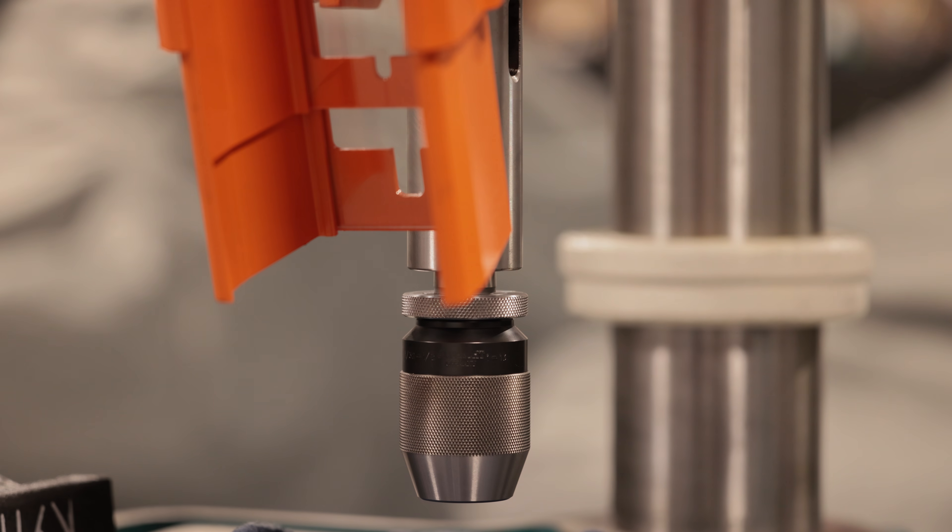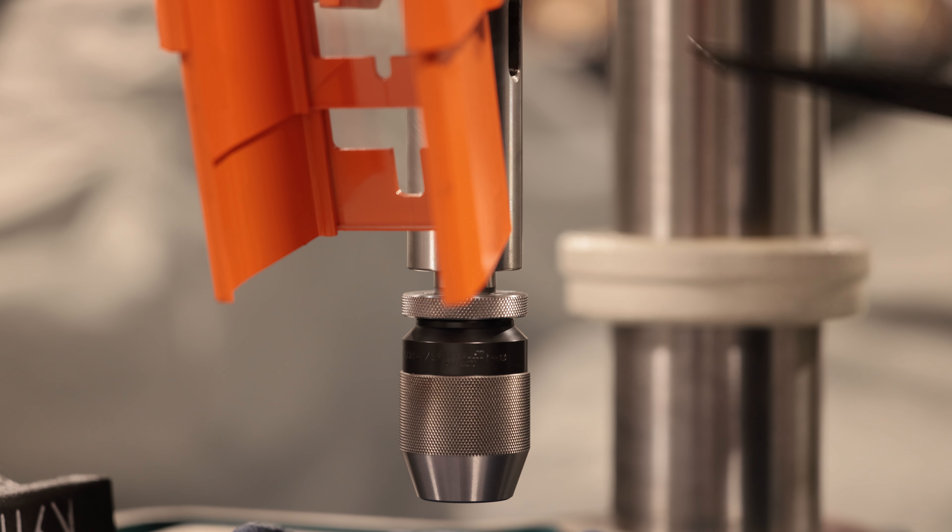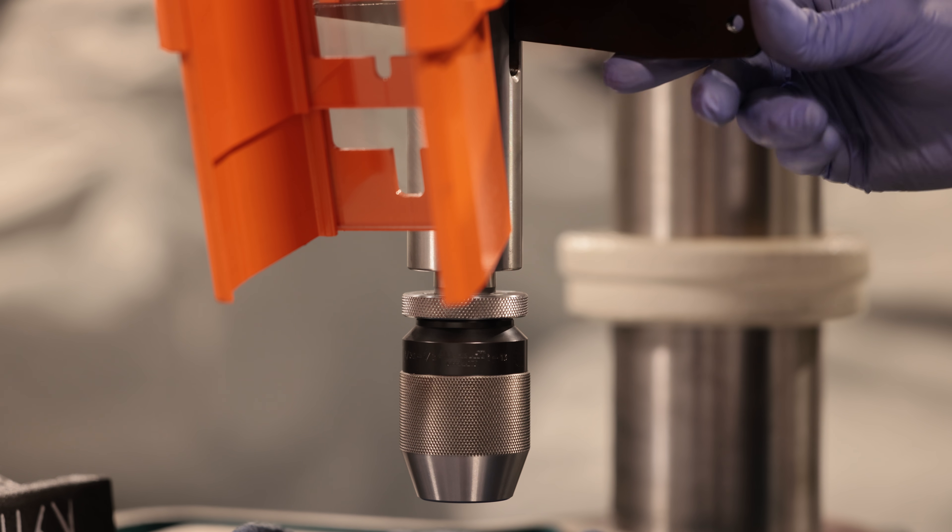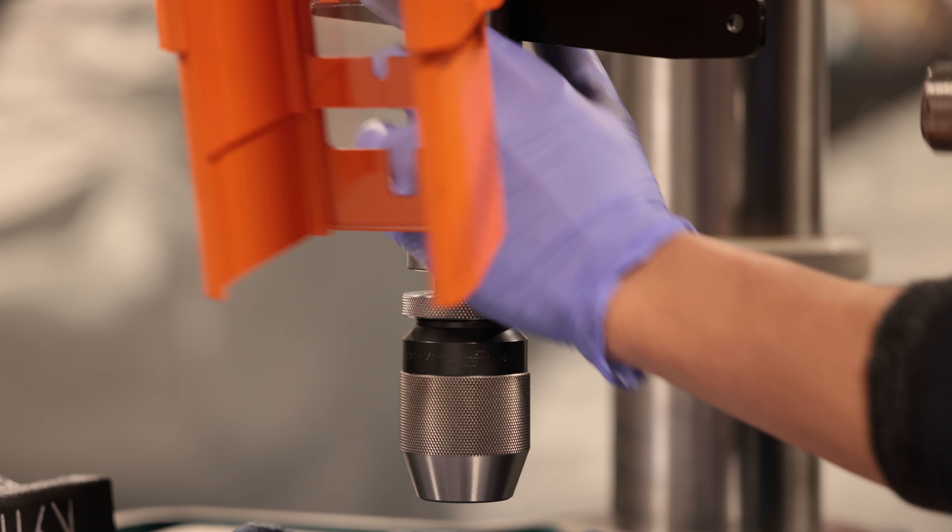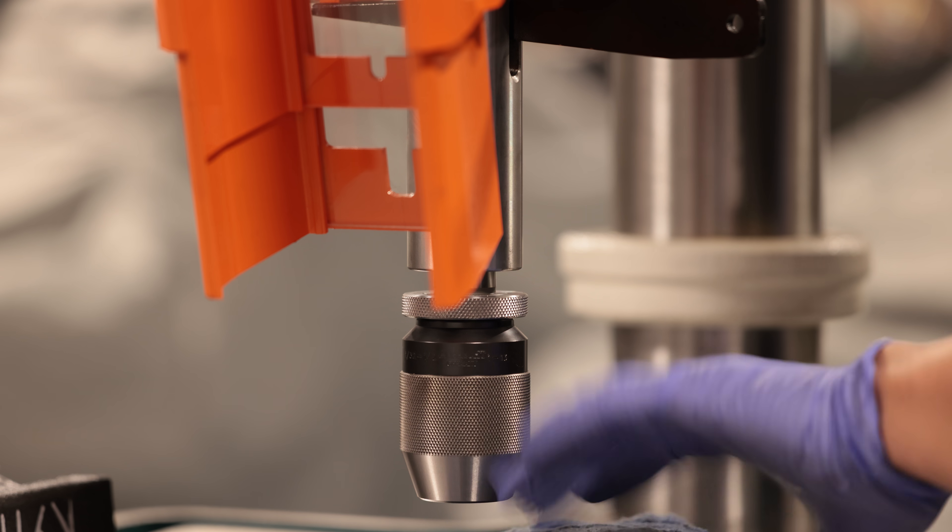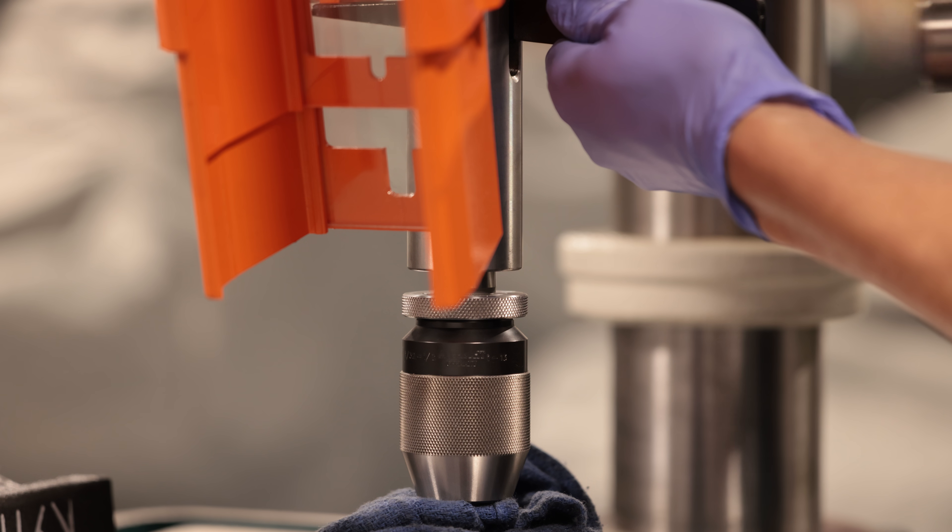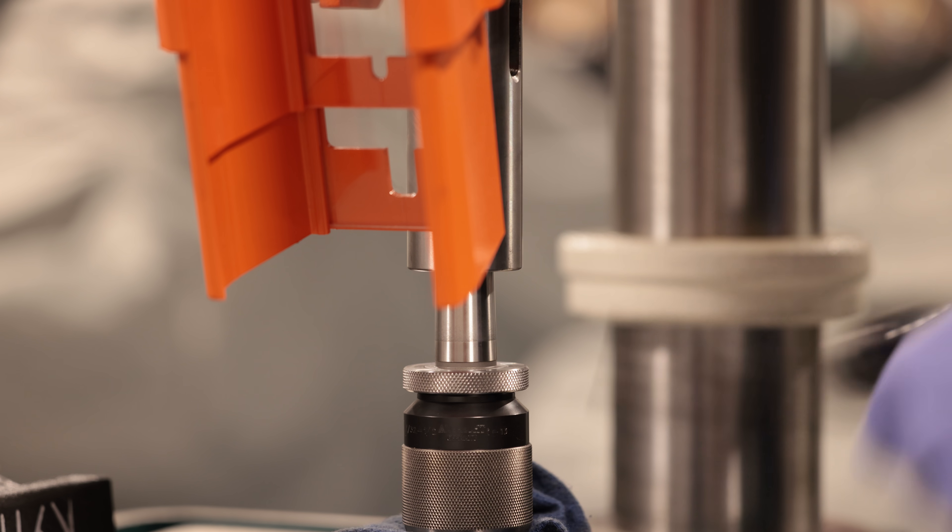The steps to remove the chuck are very simple. All you need is your drift key and a hammer. I'll lock the quill down to its lower position and put something soft under the chuck to catch it when it releases. A folded rag will do the job. A few taps of the hammer and the chuck should release quite easily.